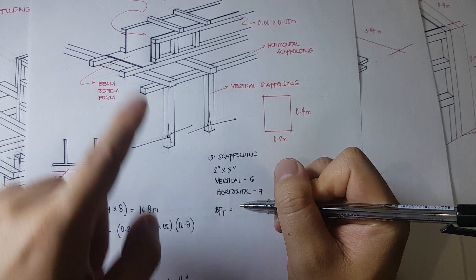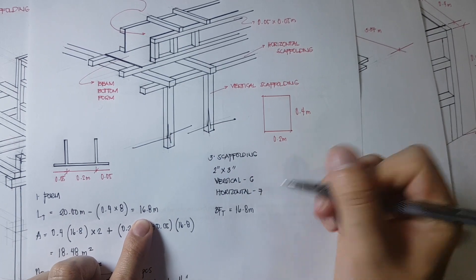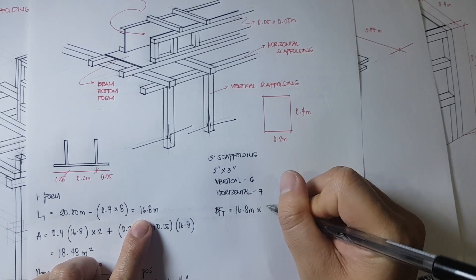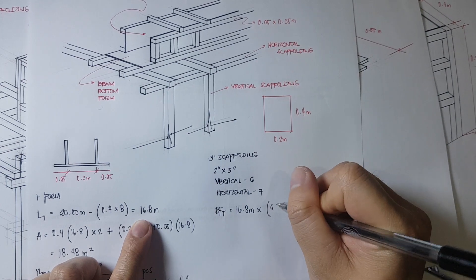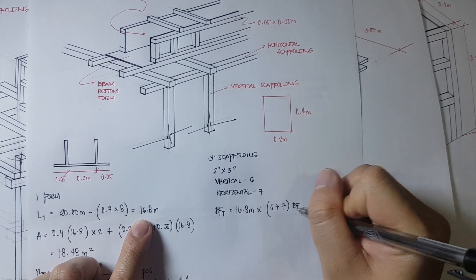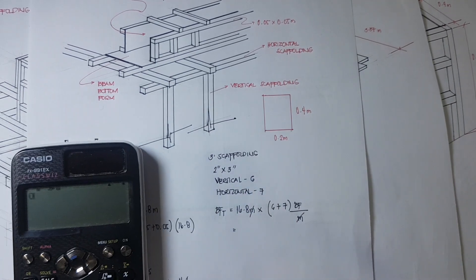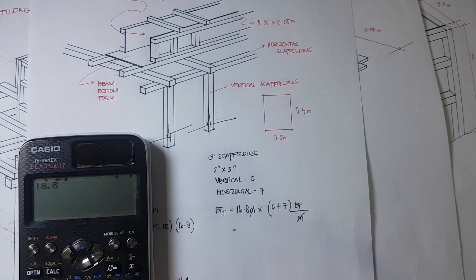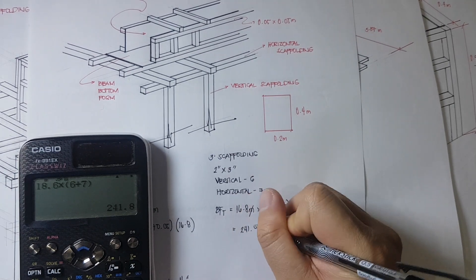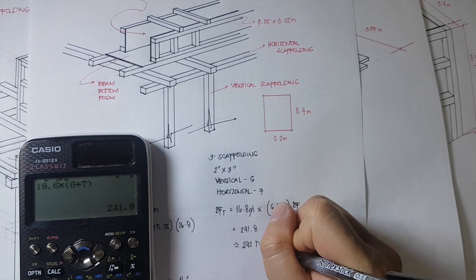So the total board foot for scaffolding for the beam is equivalent to 16.8 meters length times (6 plus 7) board feet per meter. The units cancel out, so the total board foot is 16.8 times 13, which equals 218.4 — we round that up to 242 board feet.